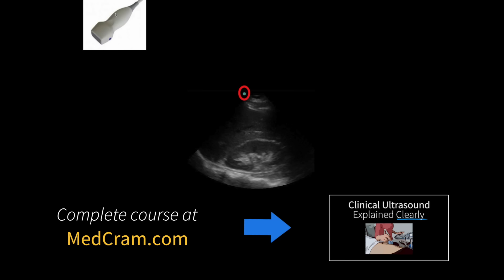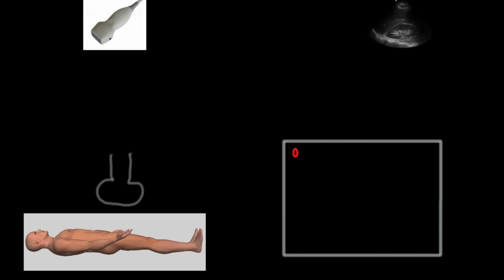You'll notice that the indicator is on the left side of the ultrasound screen. So how does this work? We have our patient on the left and our ultrasound screen on the right. If I place my ultrasound transducer on the patient and point the indicator towards the patient's head, or superiorly, that tells me the left side of the screen is superior. The opposite of that is then true: since the opposite end of the indicator is pointing inferiorly, the right side of the screen represents inferior.